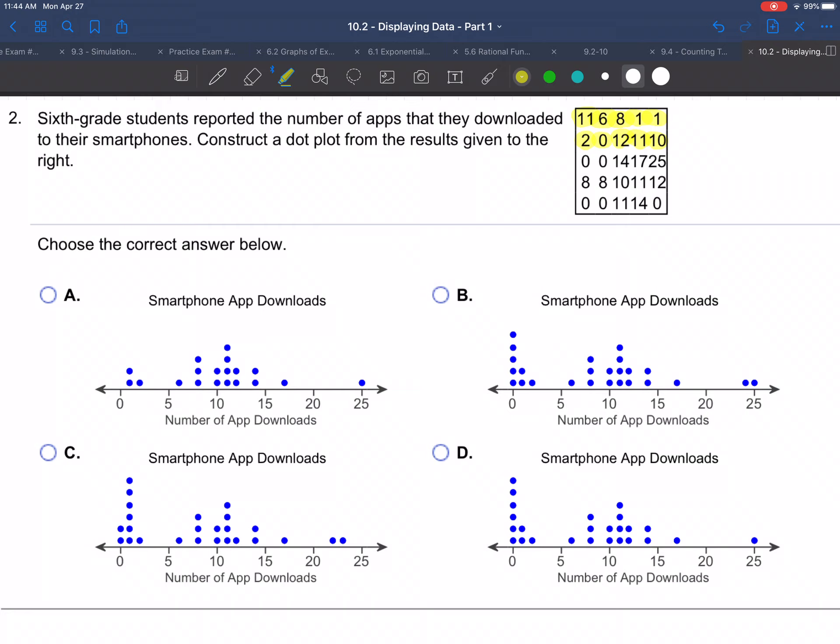The number of apps that those sixth graders have downloaded to their smartphones. I'm not sure it's good for all sixth graders to have their own smartphones, but anyway, that's a separate issue. All right, so let's figure this out. So we're supposed to turn this into a dot plot, so here we have the four different dot plots. How do we know? Let's look at A, for example. Is A correct?